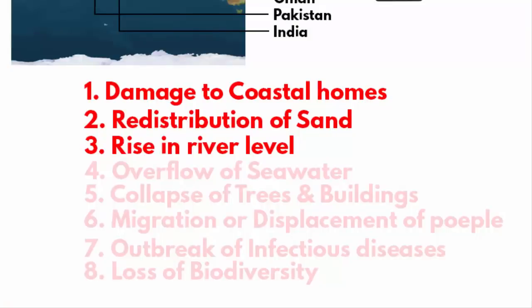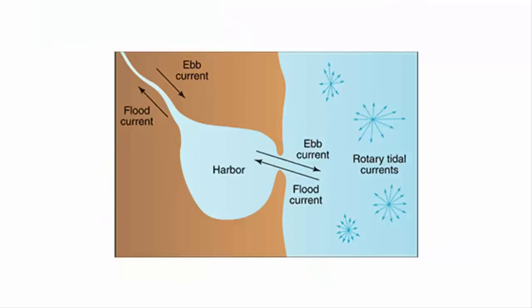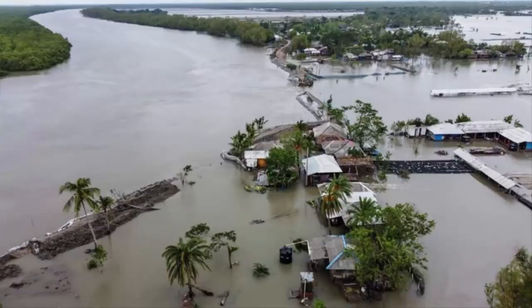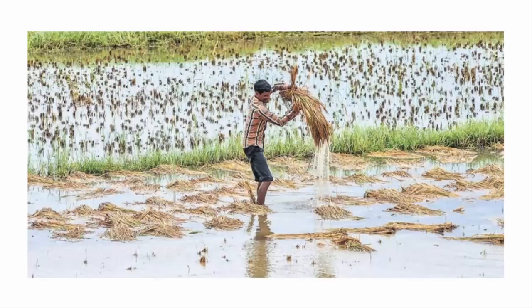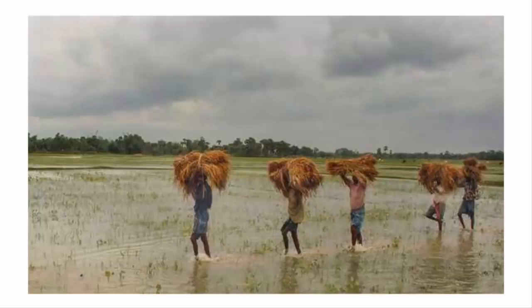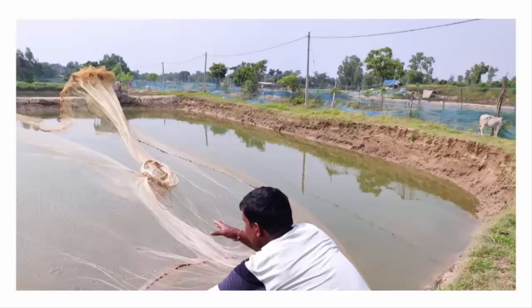The fourth impact is the overflow of seawater. There will be an overflow of seawater due to heavy wind and high waves. As seawater overflows and submerges the land, the salty water kills crops and makes farmland infertile. Seawater also kills fish reared in freshwater ponds. This means a severe cyclone is detrimental to both the agriculture and fisheries sectors.